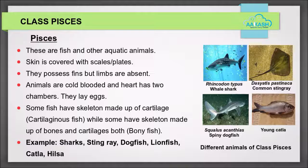Class Pisces: these are fish and other aquatic animals. The skin is covered with scales or plates. They possess fins but limbs are absent. Animals are cold-blooded and the heart has two chambers. They lay eggs. Some fish have a skeleton made up of cartilage — cartilaginous fish — while some have a skeleton made up of both bones and cartilage — bony fish. Examples: sharks, stingray, dogfish, lionfish, Catla, and Hilsa.